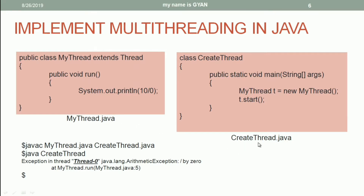We have another Java file createThread.java, which contains the class createThread. In the class createThread, we have the method main. This method will execute in the thread main. Note the difference: the method main executes in the thread main, but the method main is different from the thread main. The thread main is the processing sequence in which the method main executes. The run() method will execute in a different thread — a thread different from the thread main. So we now have two threads.